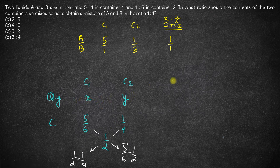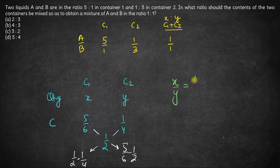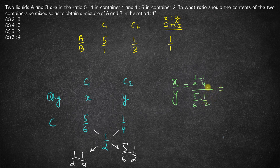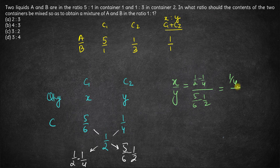The ratio of these two quantities x and y, x upon y will be equal to this difference half minus 1 by 4 upon this difference 5 by 6 minus half. This difference comes out to be 1 by 4 and this difference here comes out to be 2 by 6.